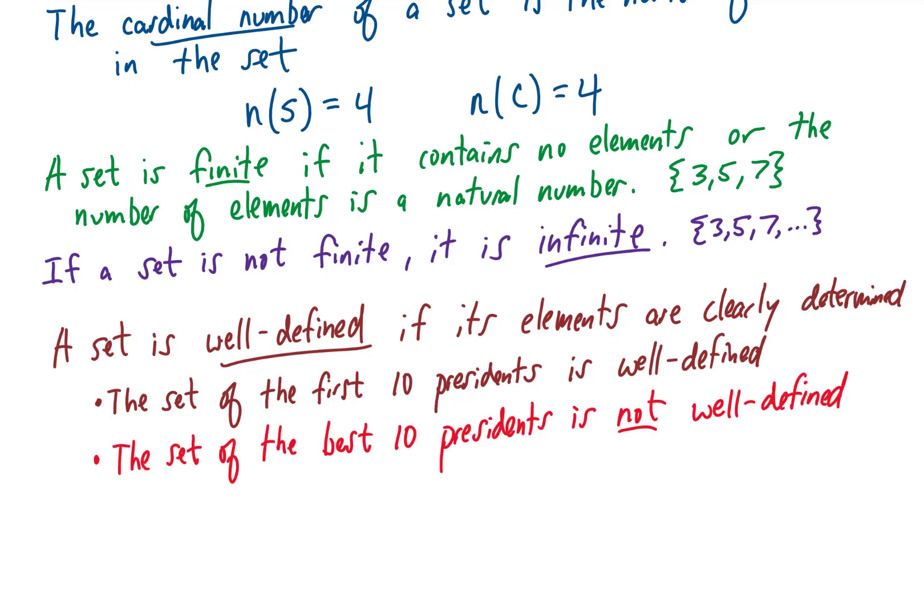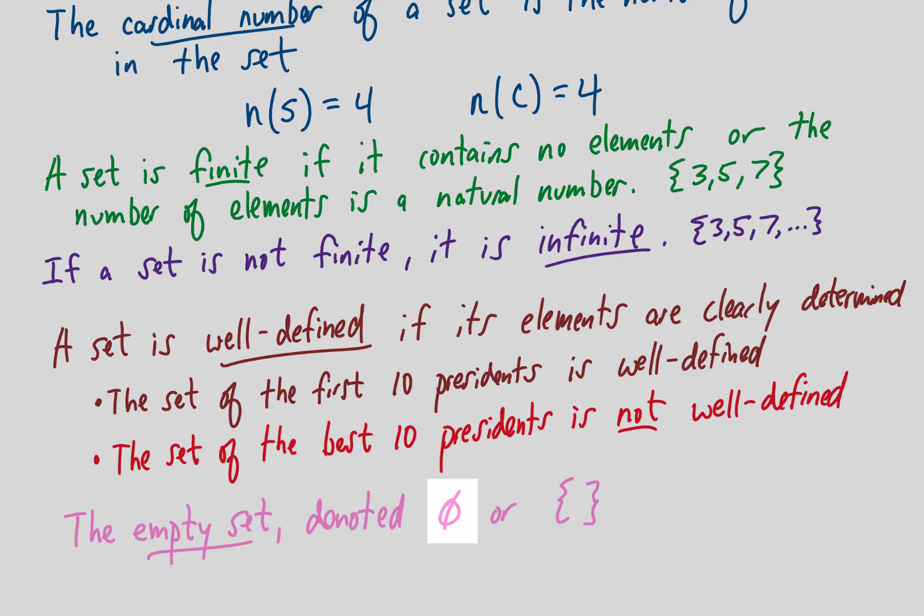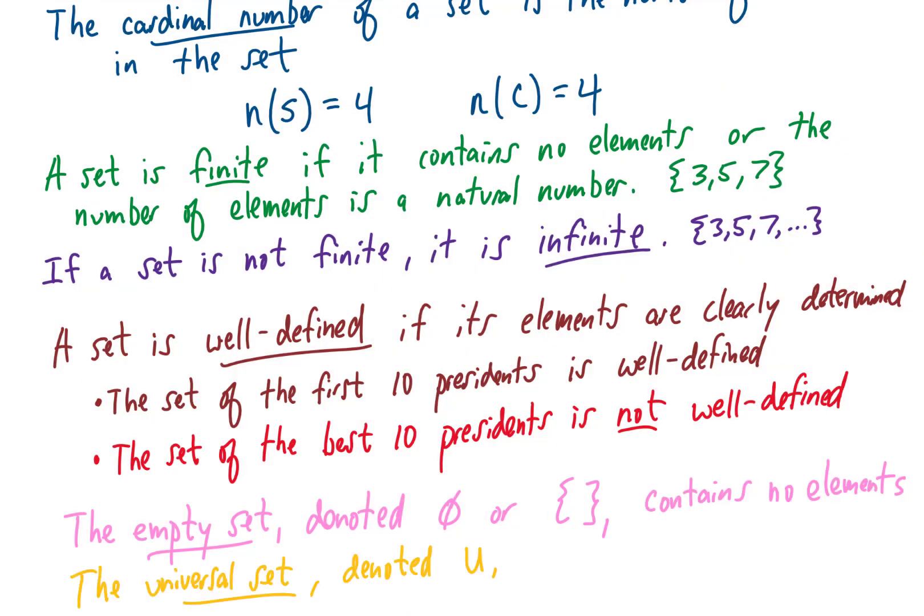And a couple more important sets really quickly. The empty set is denoted in this way or literally with some braces that are just empty, and is the set that contains no elements. And last one, the universal set, which we denote with a U, contains all the elements that you're talking about in whatever particular discussion you're having. So if our sets are describing presidents, then the universal set would be the set of all U.S. presidents.